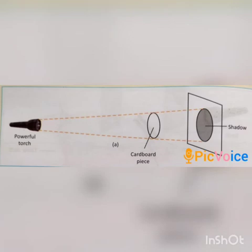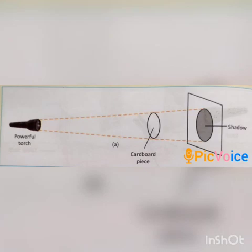For the second characteristic, we can decorate the circular piece of cardboard with different colored papers. We will observe that the shadow formed on the screen does not show these different colors — the shadow of an opaque object is always black, irrespective of its color. The shadow, therefore, does not give us complete information about the object. It cannot tell us about the exact shape, size, or color of the object.